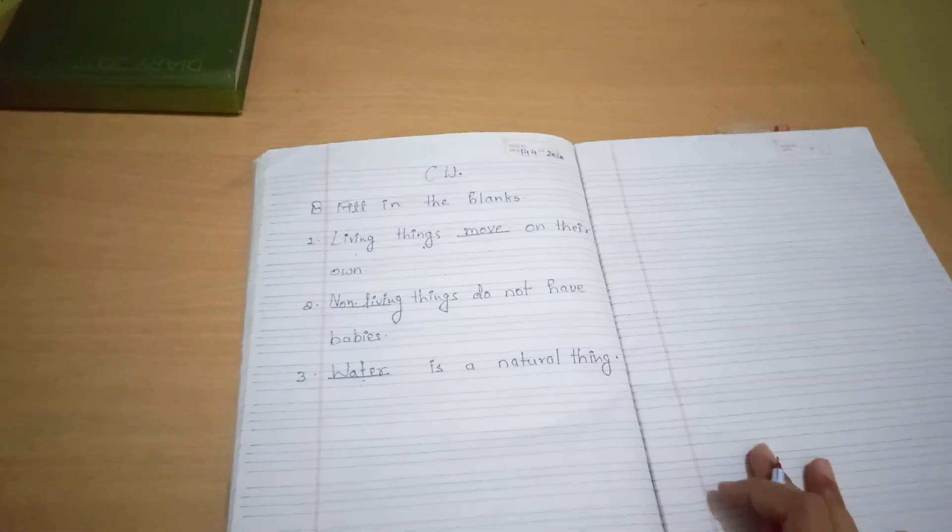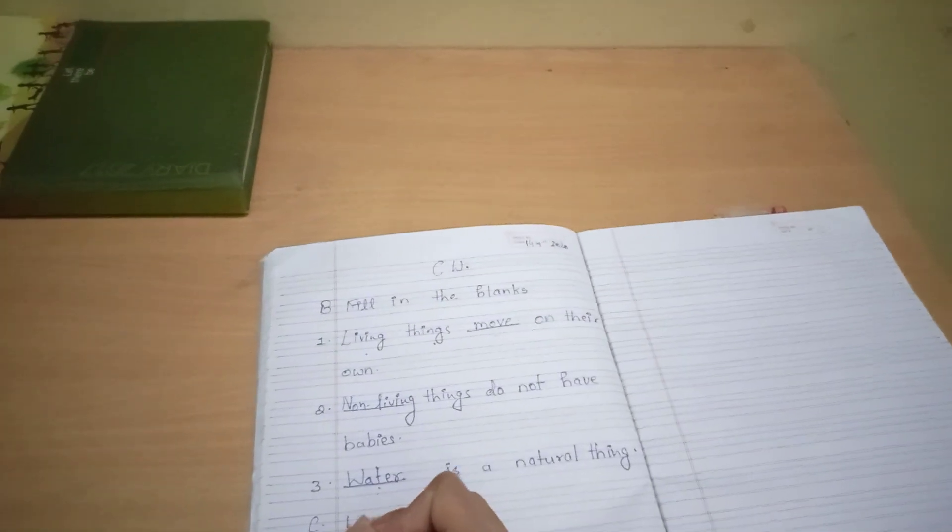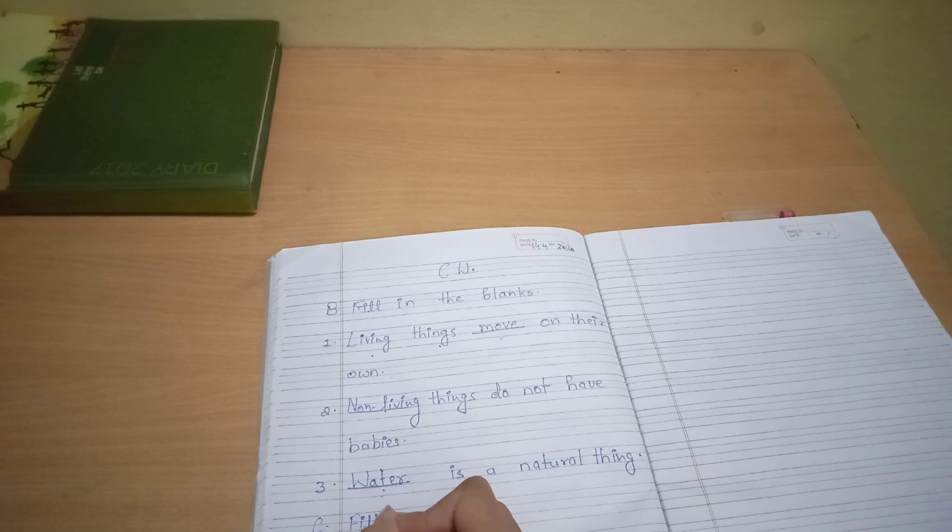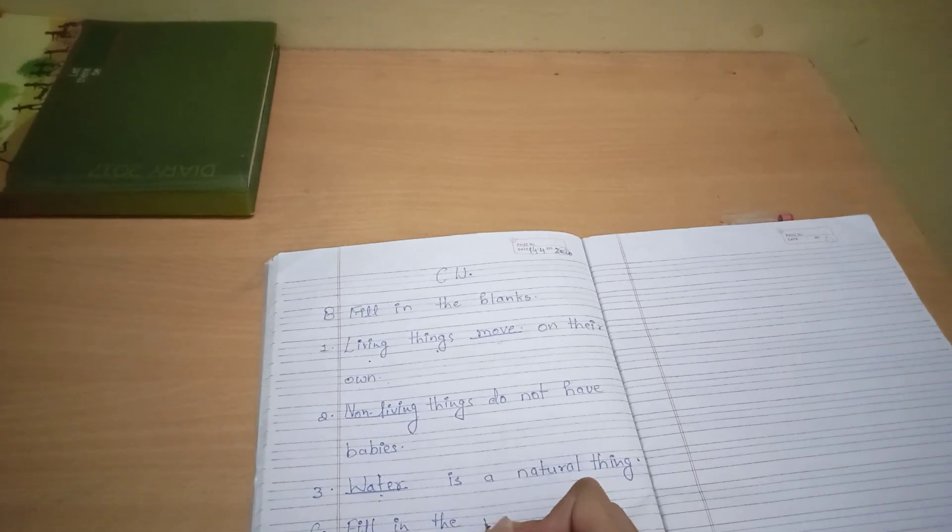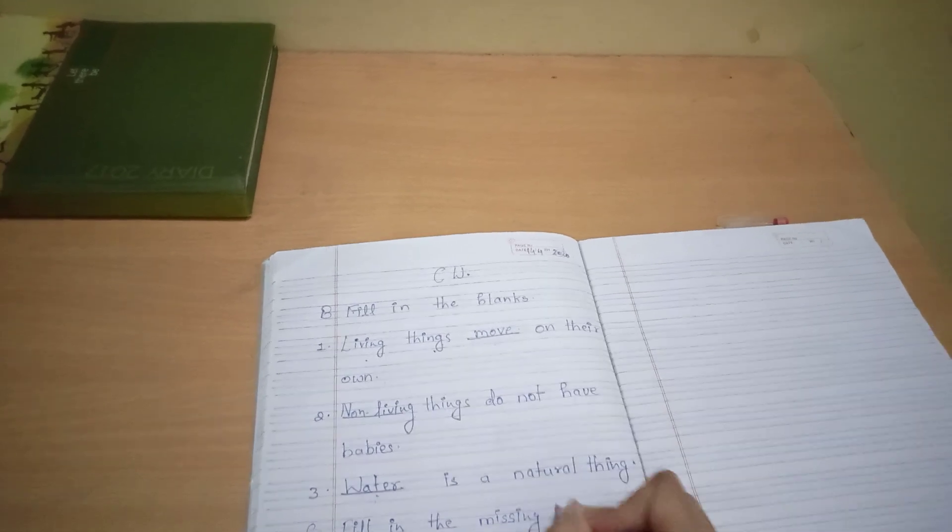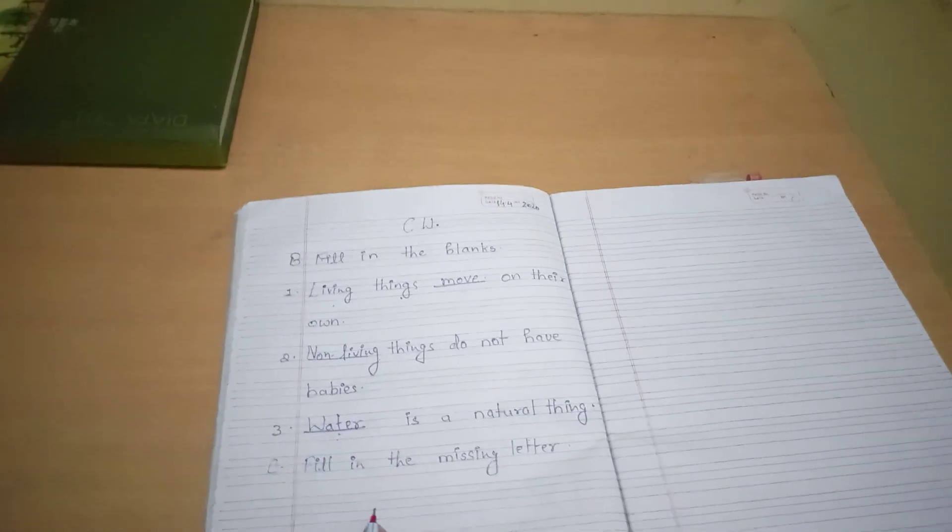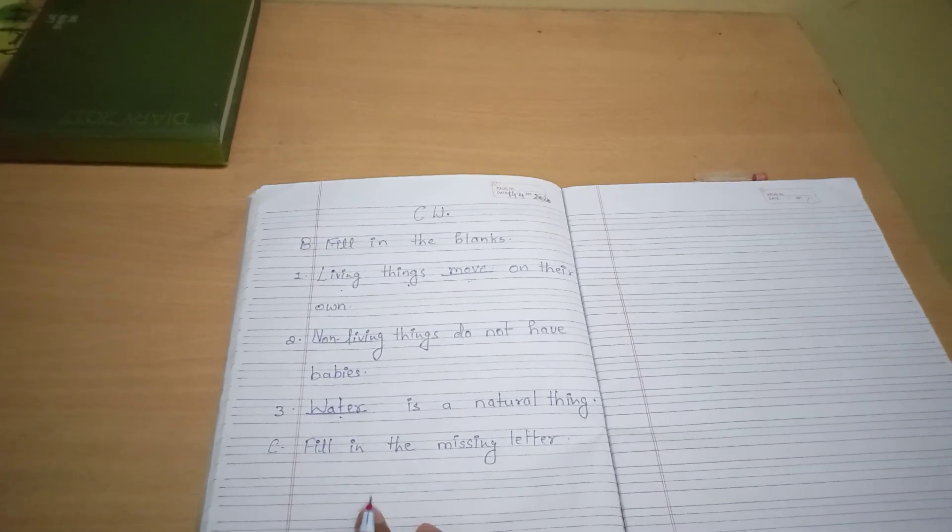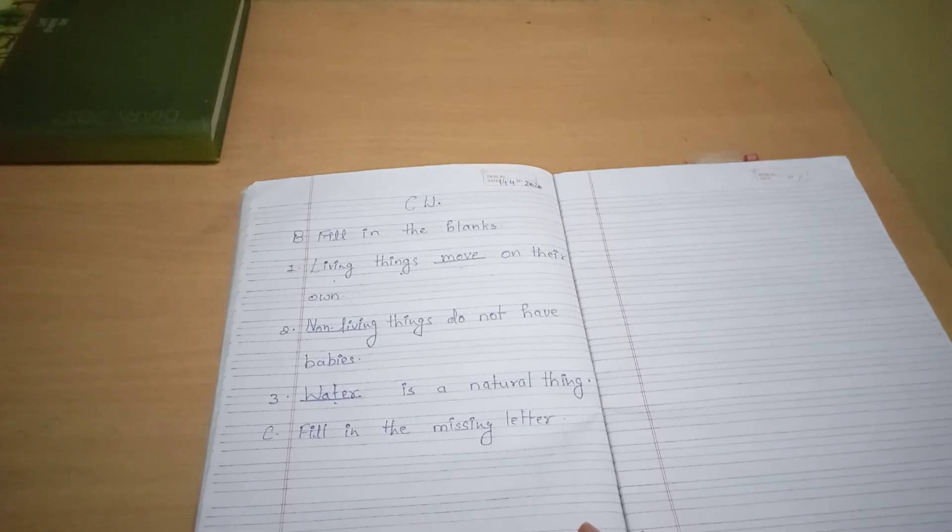Now next exercise is C. That is fill in the missing letter. अब इसमें क्या करना है? हमें कुछ letters, एक word है, जिसमें कुछ letters missing रहेंगे. हमें उसे find out करना है.